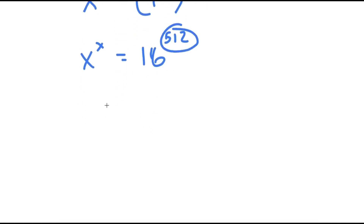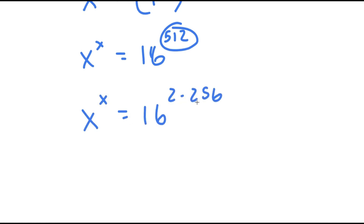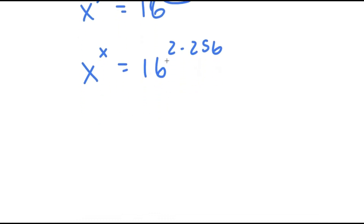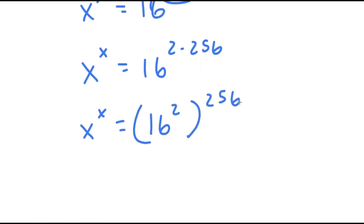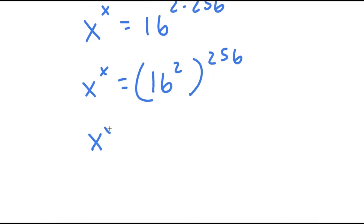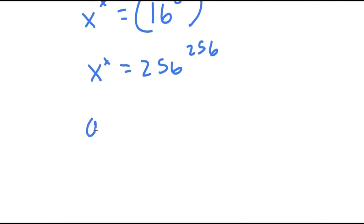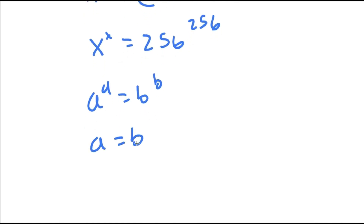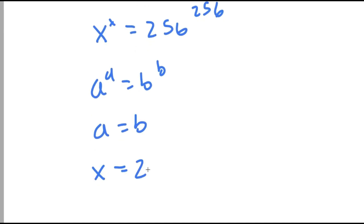Now 512 I can rewrite as 256 times 2, so I have x to the power of x equals 16 to the power of 2 times 256. Doing the same thing again: 16 to the power of 2 to the power of 256, and 16 to the power of 2 equals 256. So x to the power of x is equal to 256 to the power of 256. If I have a to the power of a equals b to the power of b, this means a equals b, so x equals 256.